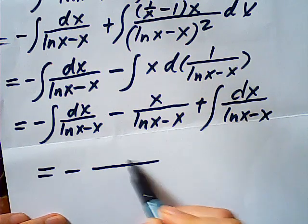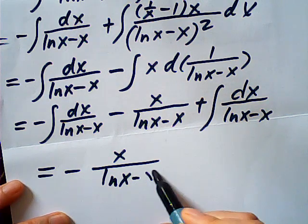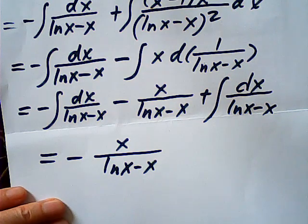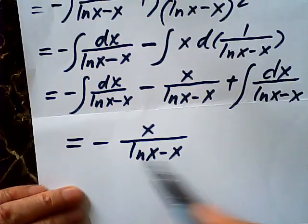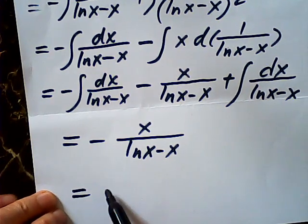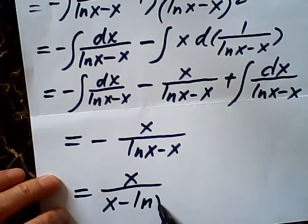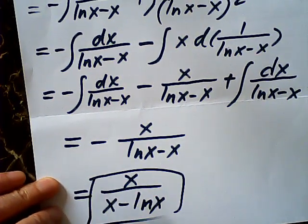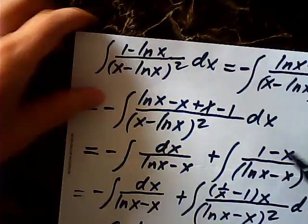So left over is negative x over log x minus x. Well, that's the end of it. That is the result of this integral. Now, if you don't like negative, we can write this way: x over x minus log x. Yeah, that's better, no negative sign. So that's the result of our integral.